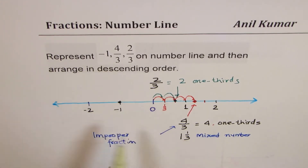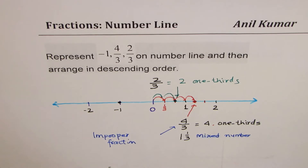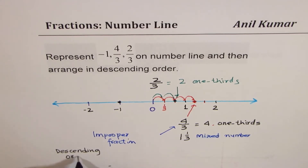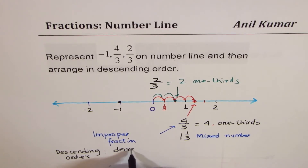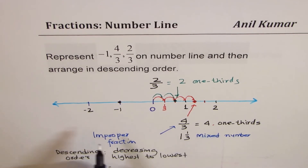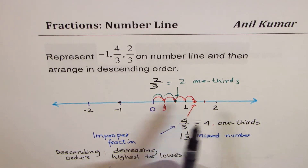We have marked all three fractions on our number line. Now let's arrange them in descending order, which means decreasing, or from highest to lowest. On a number line, the greatest number is the one on the rightmost side.